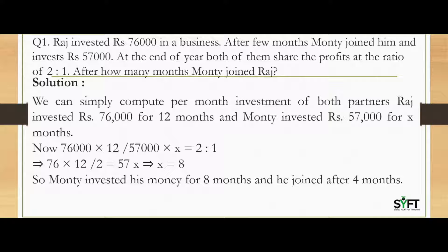Raj invested Rs.76,000 for 12 months and we assume that Monty invested Rs.57,000 for X months. Now we know that Rs.76,000 into 12, Raj's investment for 12 months, is to Rs.57,000 into X. This is the investment of Monty, where the profit sharing ratio is 2 is to 1.